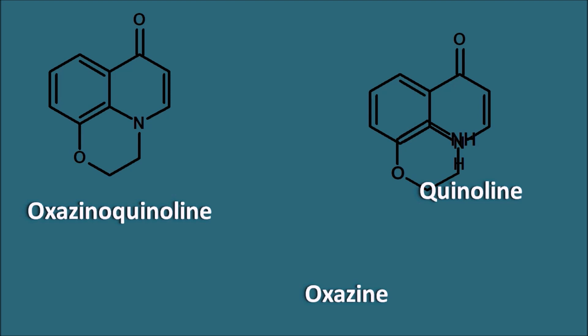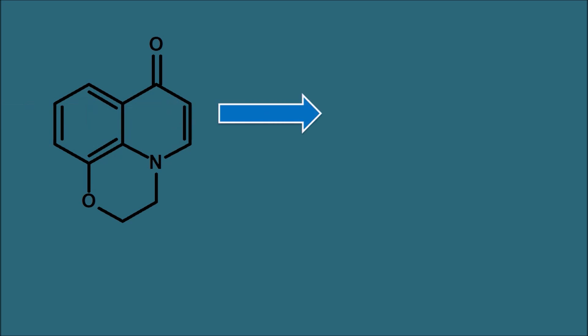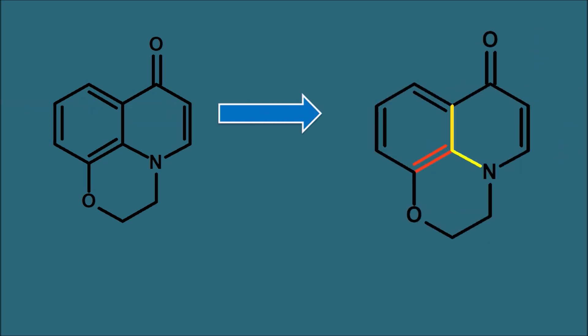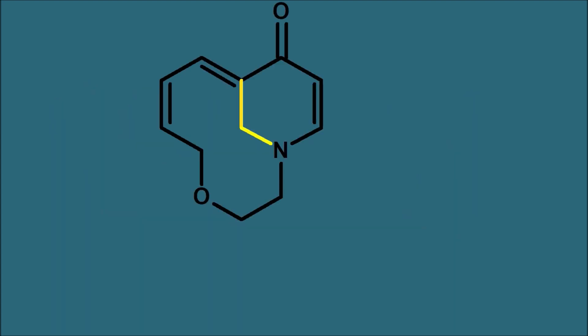Ofloxacin can be considered as a bridged tricyclo compound. Let us see how we can write the correct IUPAC name. We are considering this ring system as a tricyclo ring system. You can see that three cycles are connected by bonds shown in yellow and red color. The rings are going to be bridged by two types of bonds — yellow and red. Let us give the name for this compound by taking each bridge and then expanding the name. Initially we are going to consider the bridge shown by the yellow color.